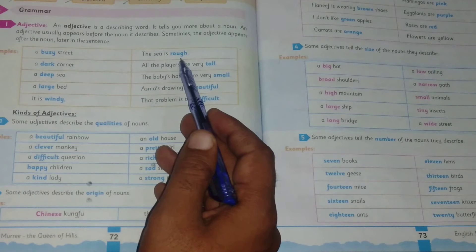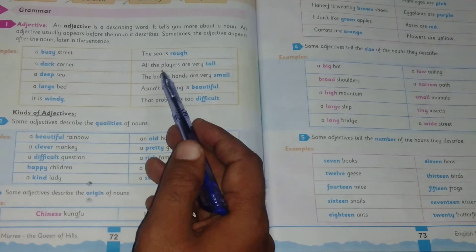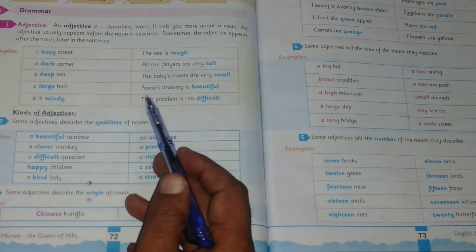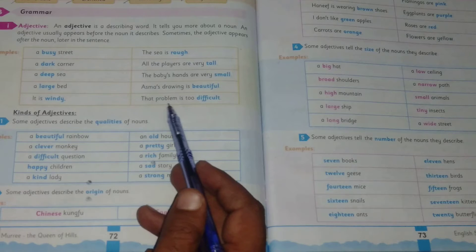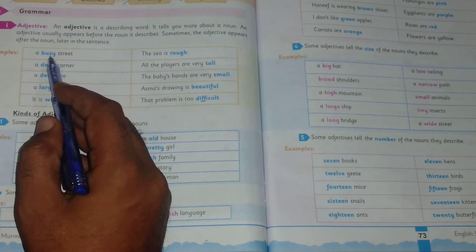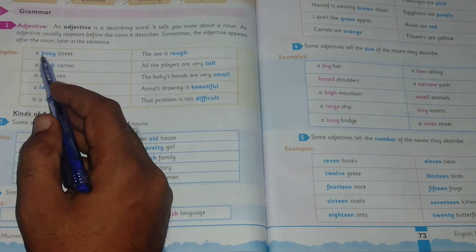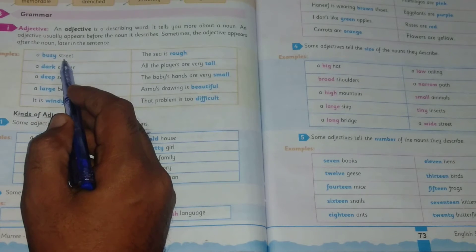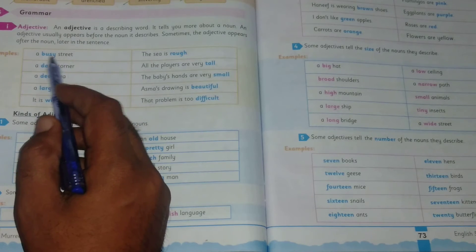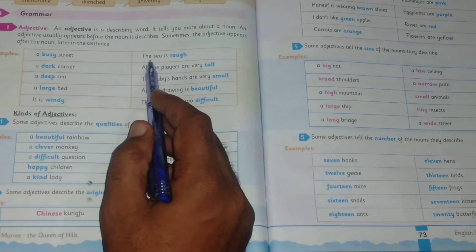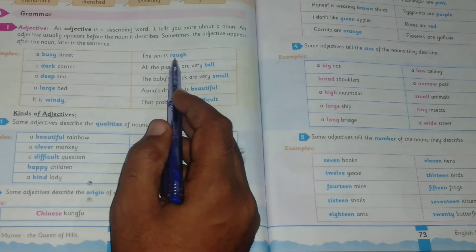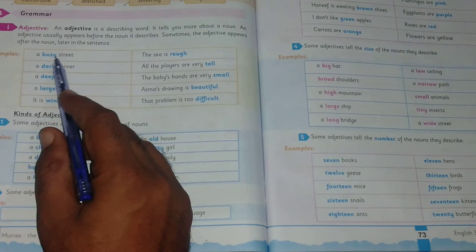The sea is rough. All the players are very tall. The baby's hands are very small. Ashma's drawing is beautiful. That problem is too difficult. Now here adjectives come before the noun. Adjectives appear before a noun, and here after the noun. The sea is rough. So this is the noun and rough is the adjective. So here it's after the noun and here it's before the noun.